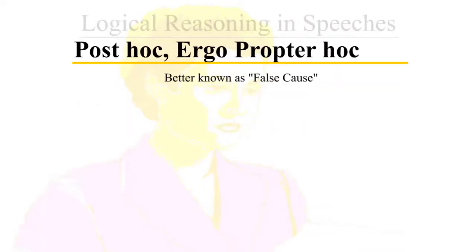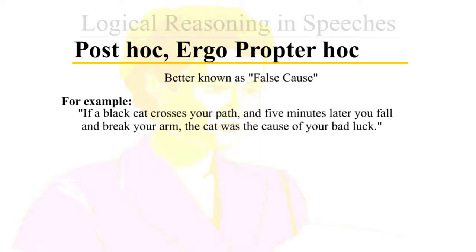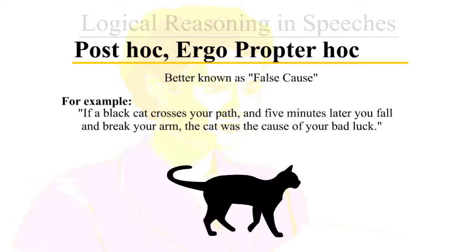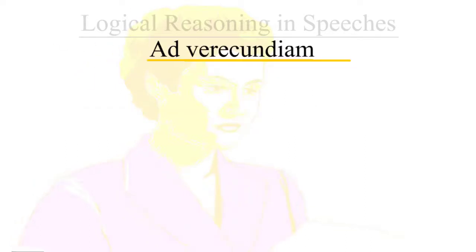Post hoc ergo propter hoc, better known as false cause. For example, if a black cat crosses your path and five minutes later you fall and break your arm, the assumption is that the cat was the cause of your bad luck.